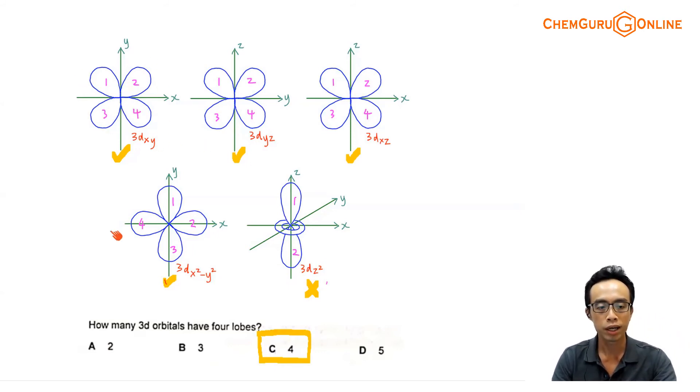So it looks exactly the same as dxy, but you take this guy and you turn it 45 degree clockwise or counterclockwise, so instead of a cross, you make it into a plus, and this will be a fourth orbital, which is lying directly along the x axis and y axis. So this would be my dx²-y².